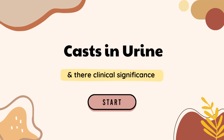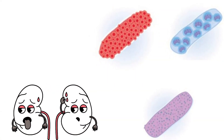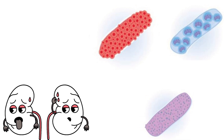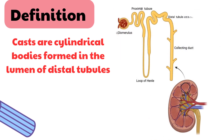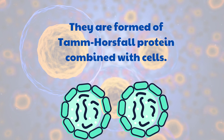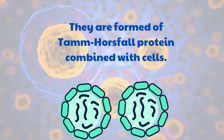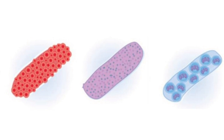Ladies and gentlemen, welcome to today's lecture on the topic of casts in urine and their significance in renal disorders. It is important to have a comprehensive understanding of the different types of casts found in urine and their associations with specific renal conditions. Urinary casts are cylindrical structures formed within the renal tubules and subsequently flushed out with urine. They are composed of various materials, including cellular debris, proteinaceous material, and other substances that can indicate underlying kidney pathology. The presence and composition of casts can provide valuable diagnostic information in the evaluation of renal disorders.